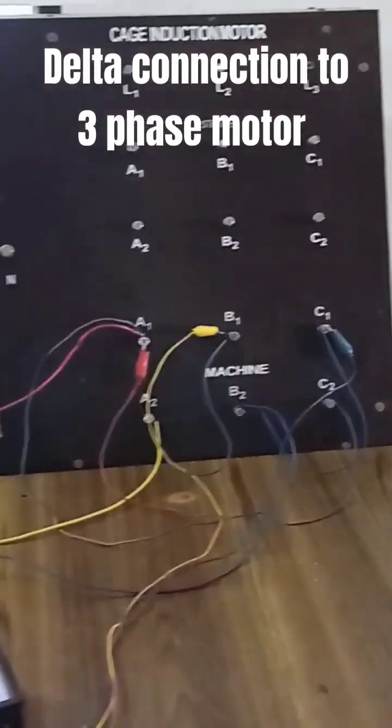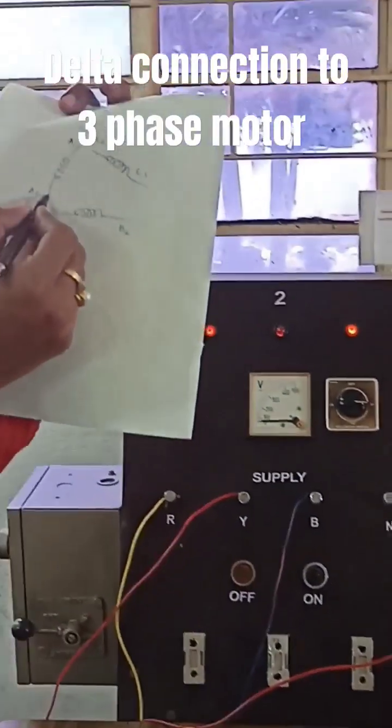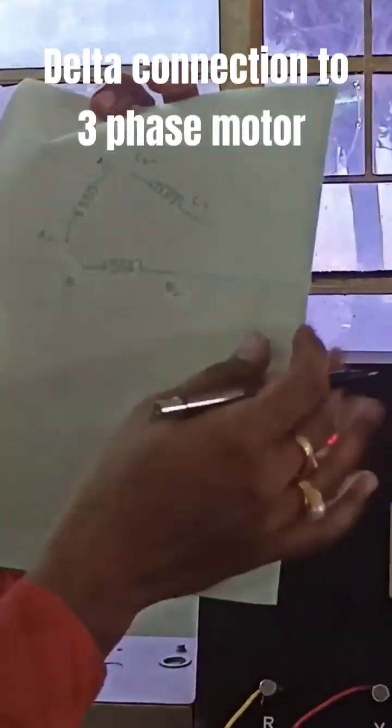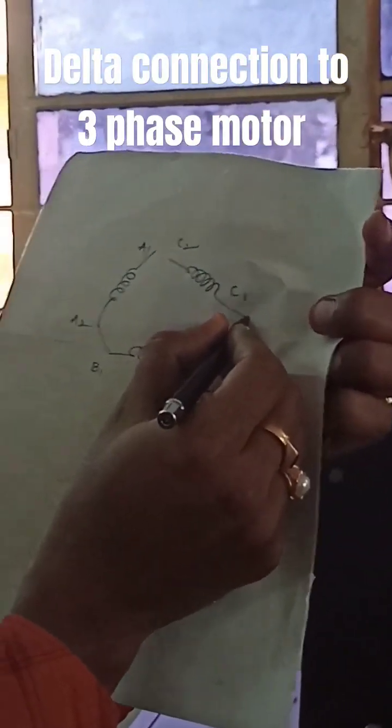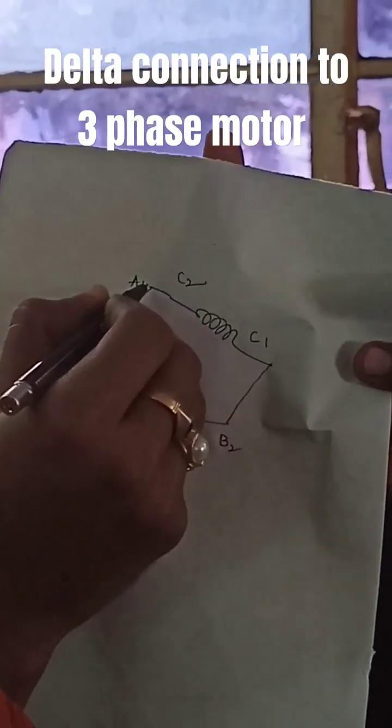Now I want to connect them in delta fashion. So very simple. Join B2 terminal to A2, join B21 to C1, join C21 to A1.